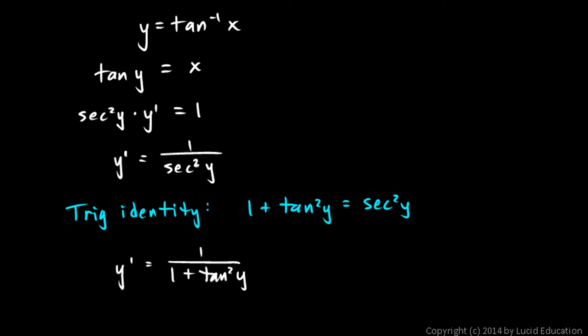So let's write that. Let's write y prime equals 1 over 1 plus tangent squared y. And how does that help? Well, let me write that a little bit more neatly: tangent squared y. If you look back up here, tangent of y is simply x.